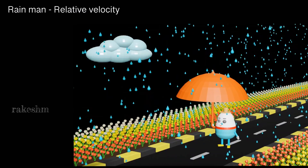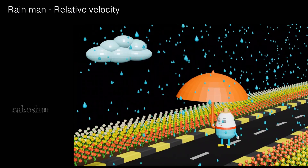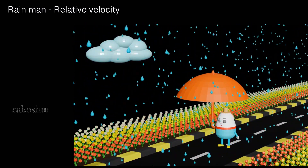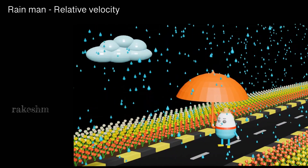Let me first discuss the types of questions asked in this topic. There is a person standing with an umbrella and rain is falling vertically downwards. If he starts to move forward, what angle should he keep the umbrella so that he does not get wet? If he moves backwards, what angle should he keep the umbrella? If rain is not falling vertically but slanted, how should he move so that he does not get wet? These are the types of questions in the rain-man problem.